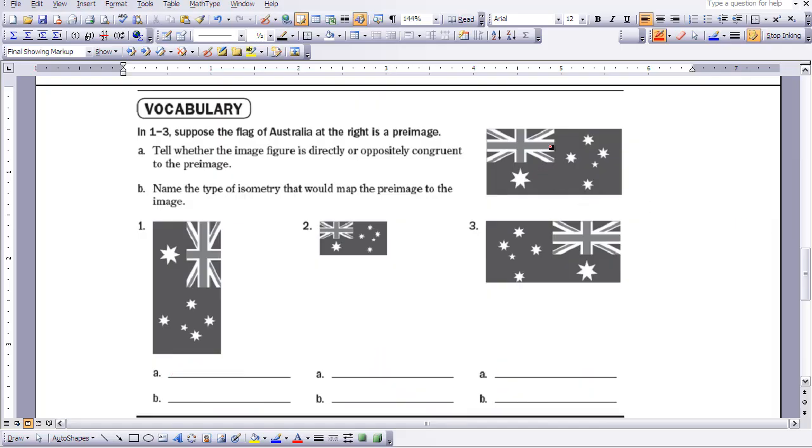As you look at the Australian flag here on the right, you notice that its relationship to number 1 has the same orientation. They're directly congruent to each other and they're just an example of a rotation. The image here is rotated to match up with the image in number 1. If you look at number 2, they are clearly not the same size, so they are not congruent to each other, neither oppositely or directly. You can tell that there's been a size change transformation performed here. If you look at number 3, those are oppositely congruent flags and they have had a reflection performed.